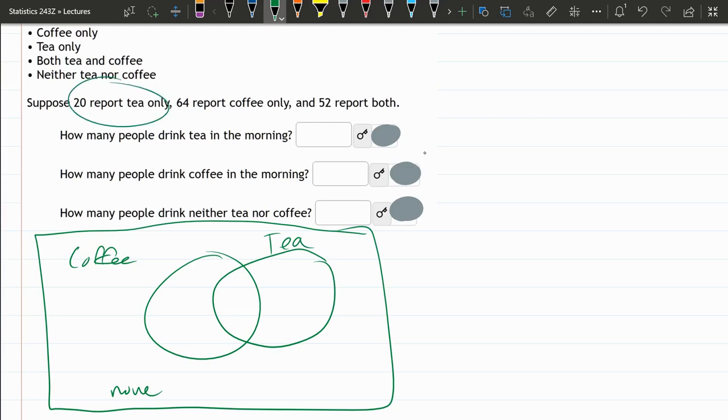All right, 20 report tea only. So it's not the entire circle for tea. Tea only is tea and not coffee, so it's only this part right here. So that's where our 20 goes. It's only for tea.